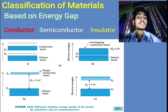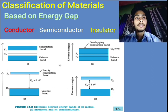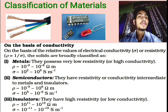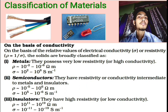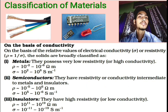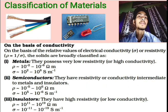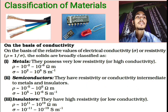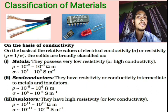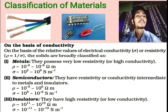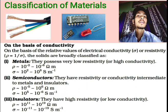Materials can also be classified based on conductivity as metals (conductors), semiconductors, and insulators. Resistivity and conductivity values are given for reference. Examples of conductors include copper wire. Examples of insulators include PVC coating or plastic. Examples of semiconductors have already been mentioned.